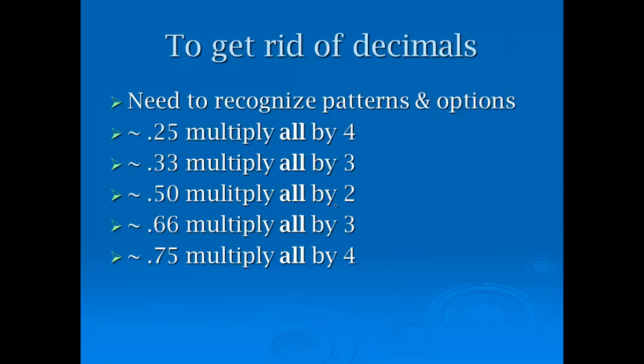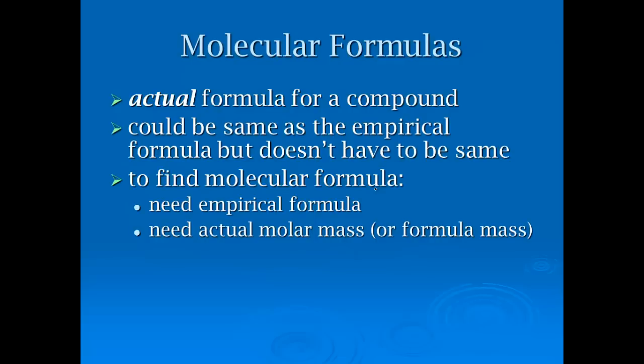There are some patterns and options. If you get 0.25, you've got to multiply all of them by 4. 0.33, multiply all of them by 3. 0.5 by 2. The most common ones that you see are the 0.5 and the 0.33, but technically all of them are fair game. So if you get a decimal, you don't necessarily have to memorize it, you can just figure it out. Keep multiplying it by integers until you get a whole number.